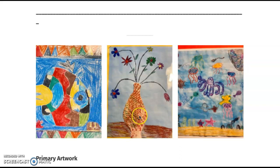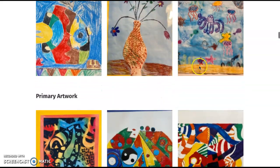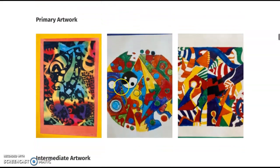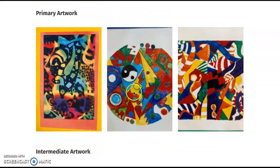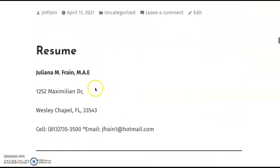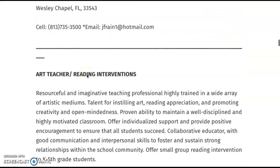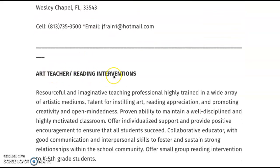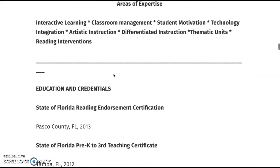The next section shows examples of student work at the primary level. You can see how we learn about shapes, collage, texture, and mixed media. These three show intermediate artwork — shape and geometric and organic shapes, primary, secondary, and neutral colors.